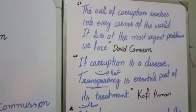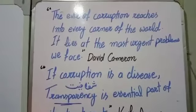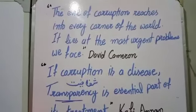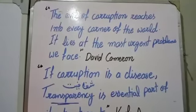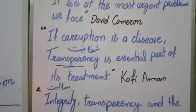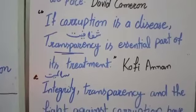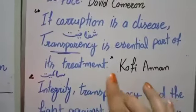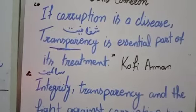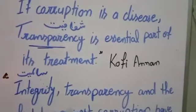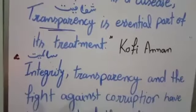کچھ quotations جو آپ اس essay کے اندر add کر سکتے ہیں: سب سے پہلے — 'The evil of corruption reaches into every corner of the world, it lies at the heart of the most urgent problems we face' — یہ David Cameron نے کہا ہے کہ corruption دنیا کے ہر کونے تک پہنچ چکی ہے اور یہ ان سب سے urgent problems میں سے ایک ہے جن کو حل کرنا ضروری ہے۔ دوسری quotation: 'Corruption is a disease, transparency is an essential part of its treatment' — یہ Kofi Annan کی statement ہے۔ یعنی corruption ایک بیماری ہے اور اس کے علاج کے لیے ہر جگہ، ہر محکمے، ہر ادارے میں شفافیت لانی ہوگی اور لوگوں کو شفافیت سے کام کرنے کے لیے rules and patterns بنانے ہوں گے۔